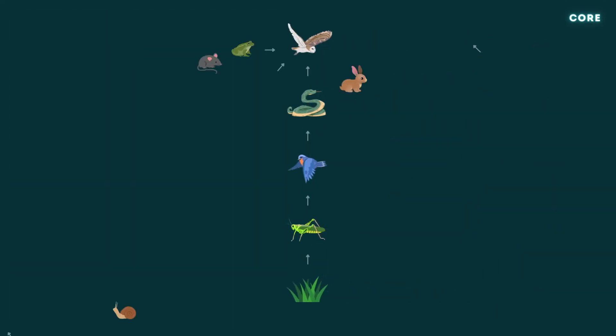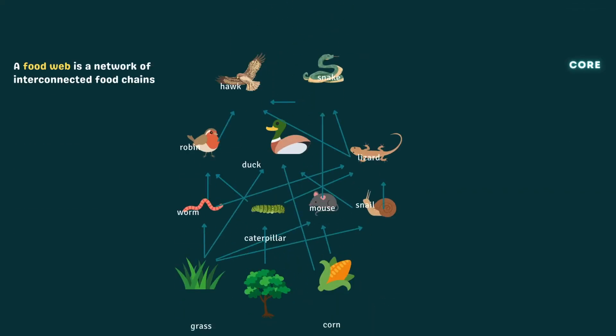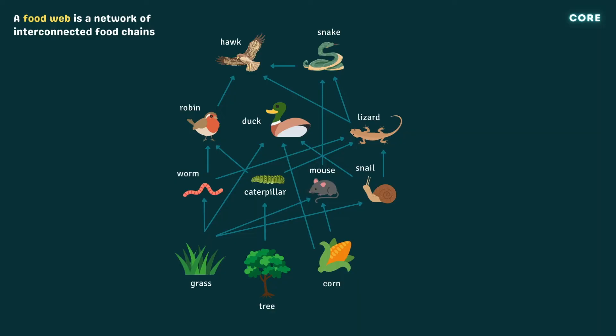For example, an owl feeds not only on snakes, but also rabbits, mice, and frogs. Grass not only sustains grasshoppers, but also mice, snails, and worms. In order to more accurately depict these relationships, a food web can be drawn, which is essentially a network of interconnected food chains.